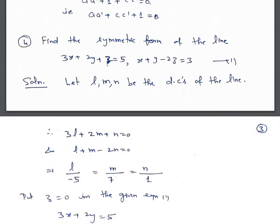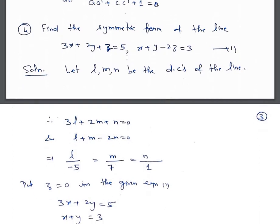Fourth example: find the symmetric form of the line 3x plus 2y plus z equals 5 and x plus y minus 2z equals 3. Suppose l, m, n are the direction cosines of the line. The line lies on both planes, so 3l plus 2m plus n equals 0 and l plus m minus 2n equals 0. By cross multiplication: l upon (minus 4 minus 1) equals m upon (1 minus minus 6) equals n upon (3 minus 2), giving direction ratios minus 5, 7, and 1.